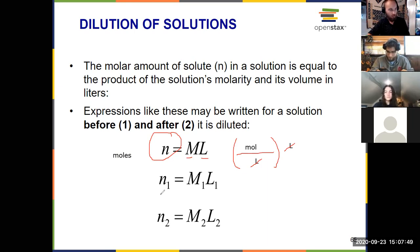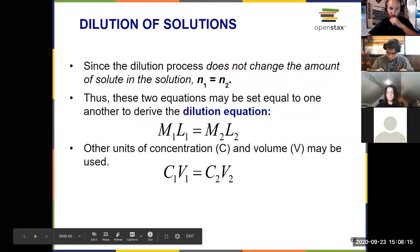Okay? So N1, which is the amount of moles at the beginning, and N2, the amount of moles at the end, doesn't change. So if I take the molarity and the volume at the beginning and the molarity and the volume at the end, I can set them equal to one another because the amount of moles is equal. It's just a little mathematical trick. Okay? So that gives me what's called the dilution equation. Okay? M1L1 equals M2L2.